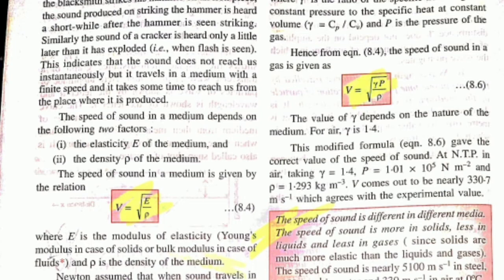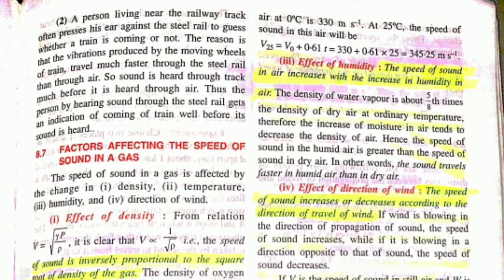Factors affecting the speed of sound in a gas. First, density: speed of sound is inversely proportional to the square root of the density of the gas. Second, temperature: as temperature increases, the speed of sound in gas increases — speed of sound is directly proportional to temperature. Third, humidity: an increase in humidity causes an increase in speed of sound — directly proportional.